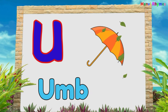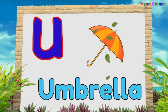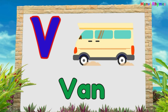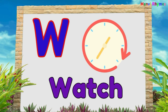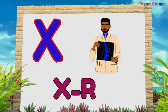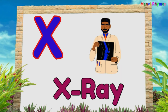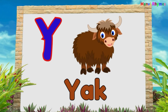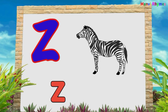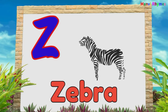U for Umbrella. V for Violin. W for Watch. X for X-Ray. Y for Yard. Z for Zebra.